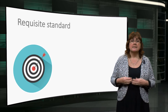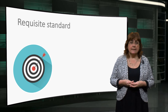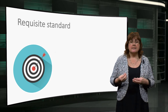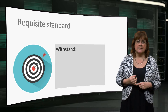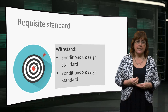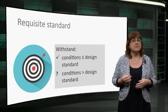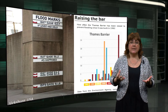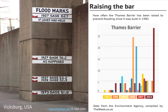First, designing to meet a requisite standard – that is, the structure should withstand all conditions apart from those exceeding the design criteria. Examples are levees such as that at Vicksburg, or storm surge barriers like the Thames Barrier, built to withstand a certain water level.